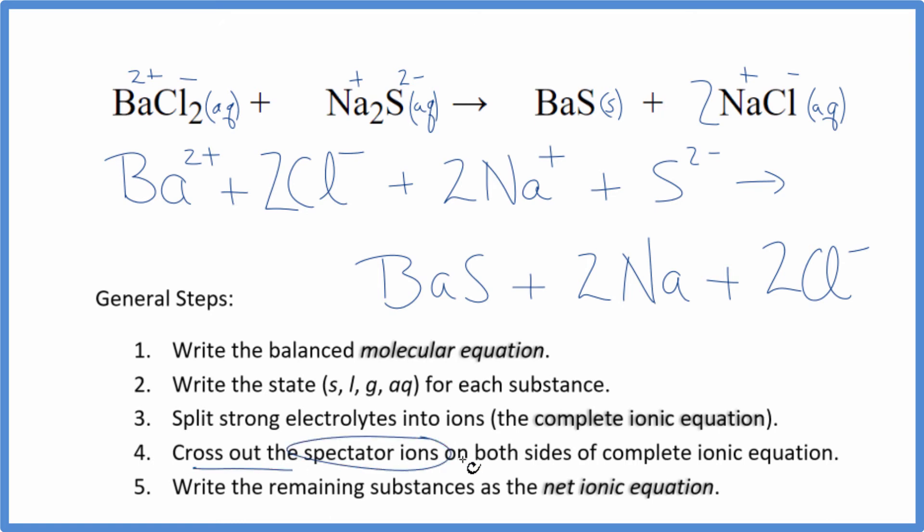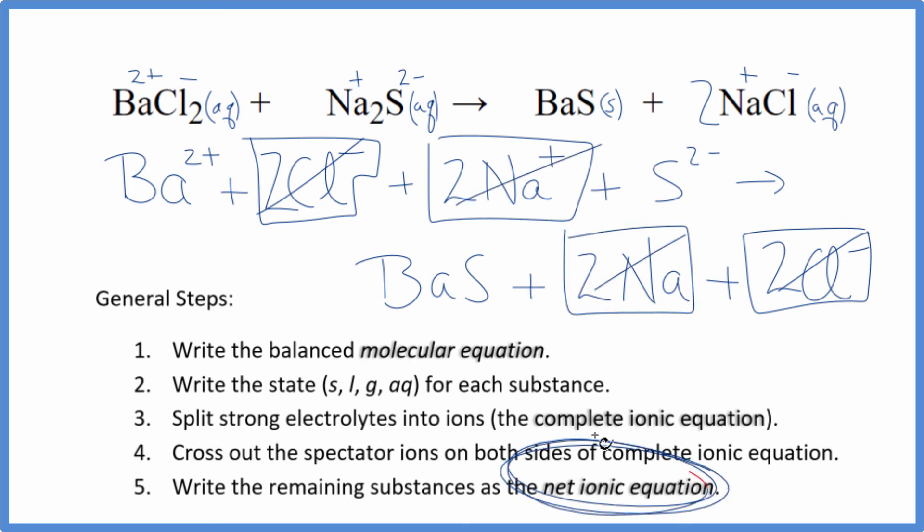Now we can cross out spectator ions, which are on both sides of the complete ionic equation. So I look at the reactants here and the products. I see 2 chloride ions right here in the reactants and in the products. Those are gone. 2 sodium ions in the reactants and in the products. What's left, that's the net ionic equation for BaCl2 plus Na2S. I'll clean it up, write the states. We'll have our net ionic equation.